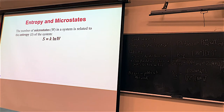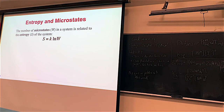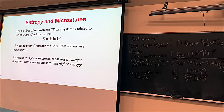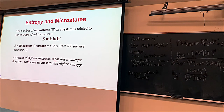Entropy is given the symbol S, and on the gravestone of Boltzmann we saw that entropy equals k times the natural log of W. This is not an equation we'll use on exams or problem sets, but entropy is related to the number of microstates W for a molecule. K here is the Boltzmann constant. The more microstates that are possible, the higher the entropy; the fewer microstates, the less entropy.